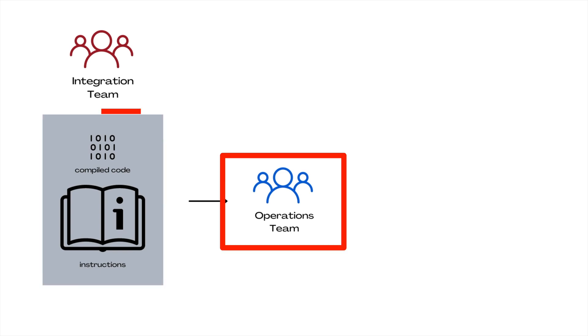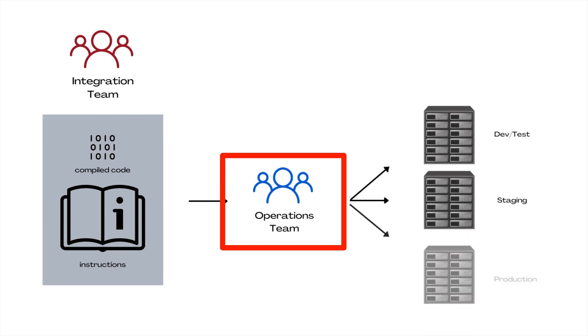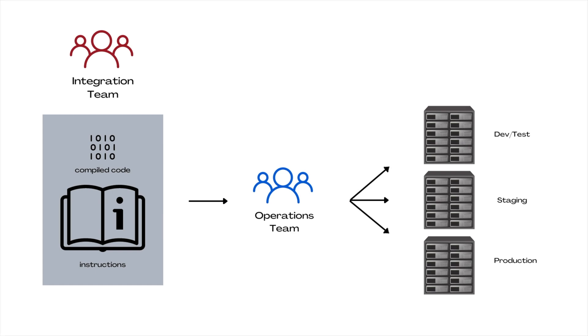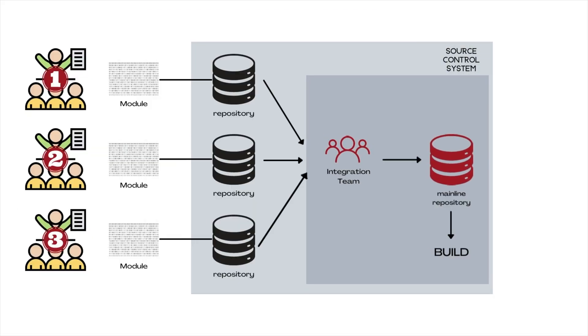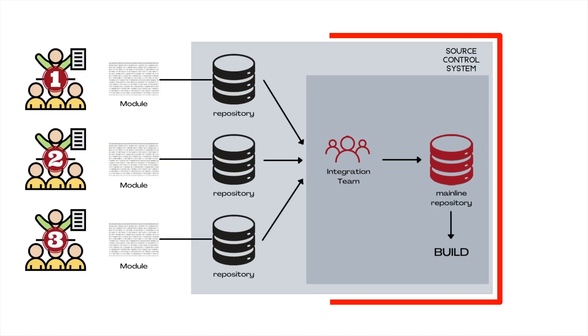The operations team takes this compiled code and follows the included instructions to install it to various environments like test environment, staging environment, and finally to the production environment that is accessible to the end user. Let's zoom into the integration piece of the entire software development and deployment process.